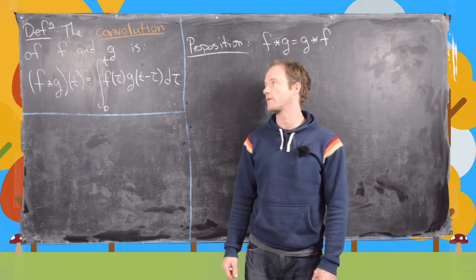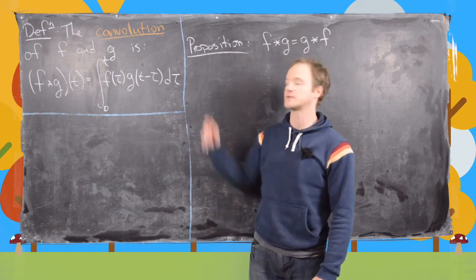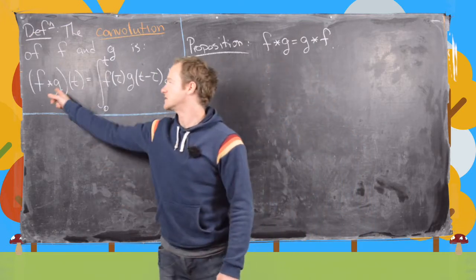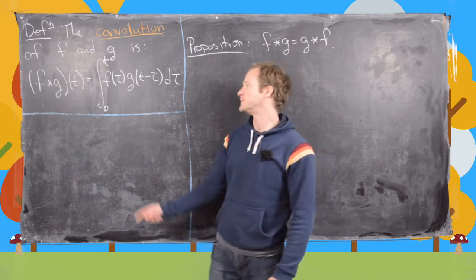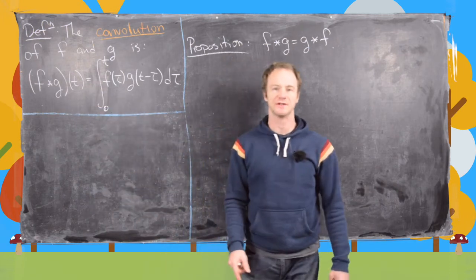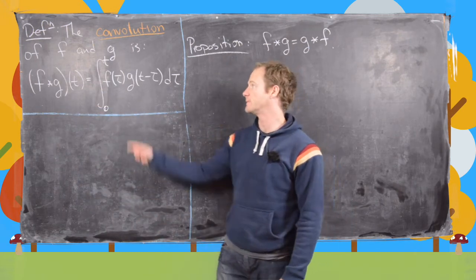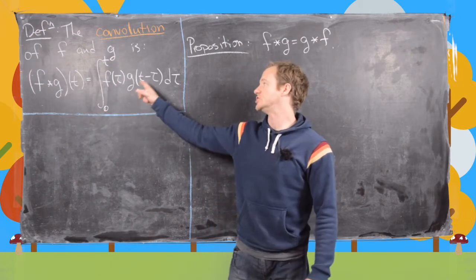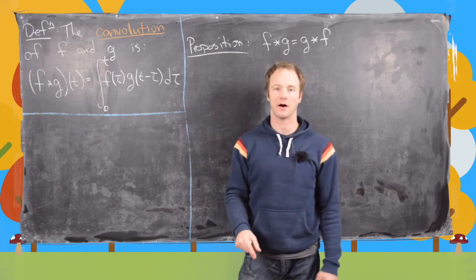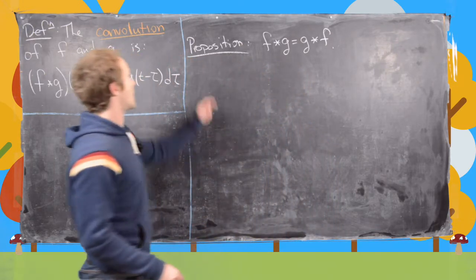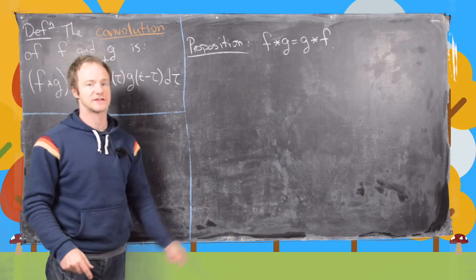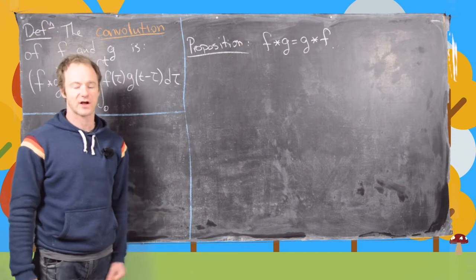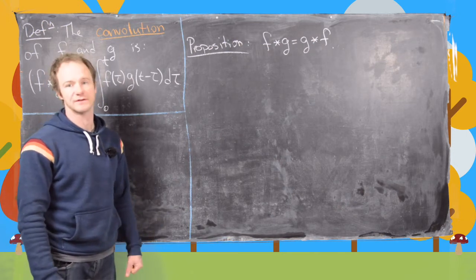In this video we're going to look at the notion of a convolution of two functions. It's defined as follows: the convolution of f and g, written f★g, is a function of t given by the integral from 0 to t of f(τ) g(t − τ) dτ. In this video I want to prove a proposition about the commutativity of this convolution operation and give a couple of examples.